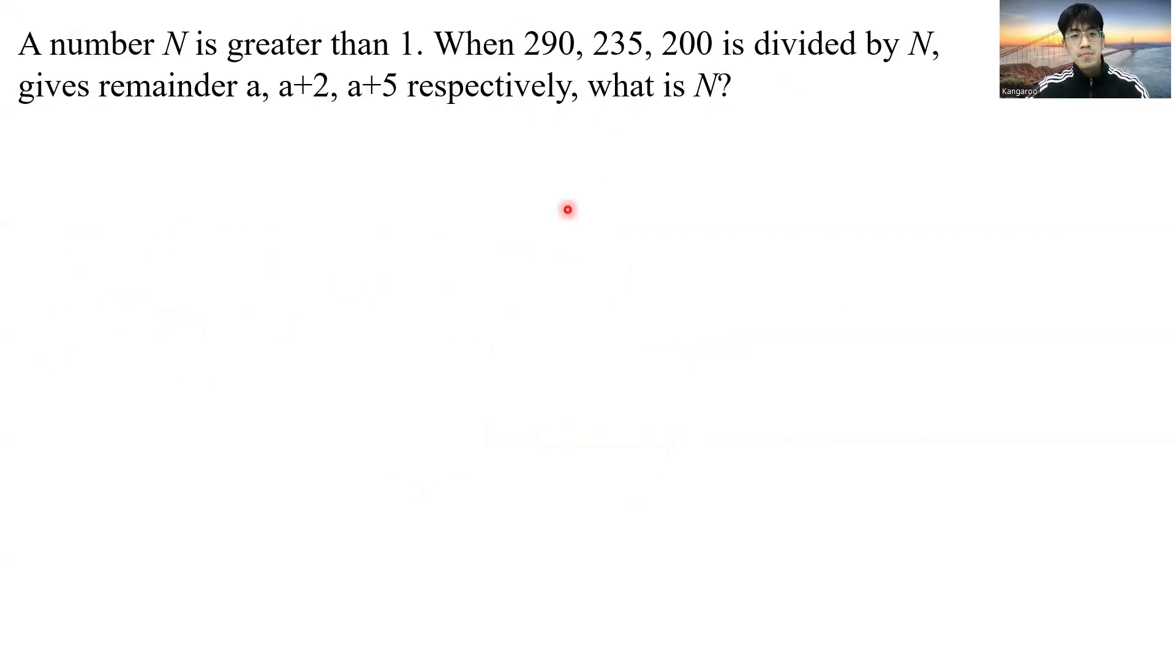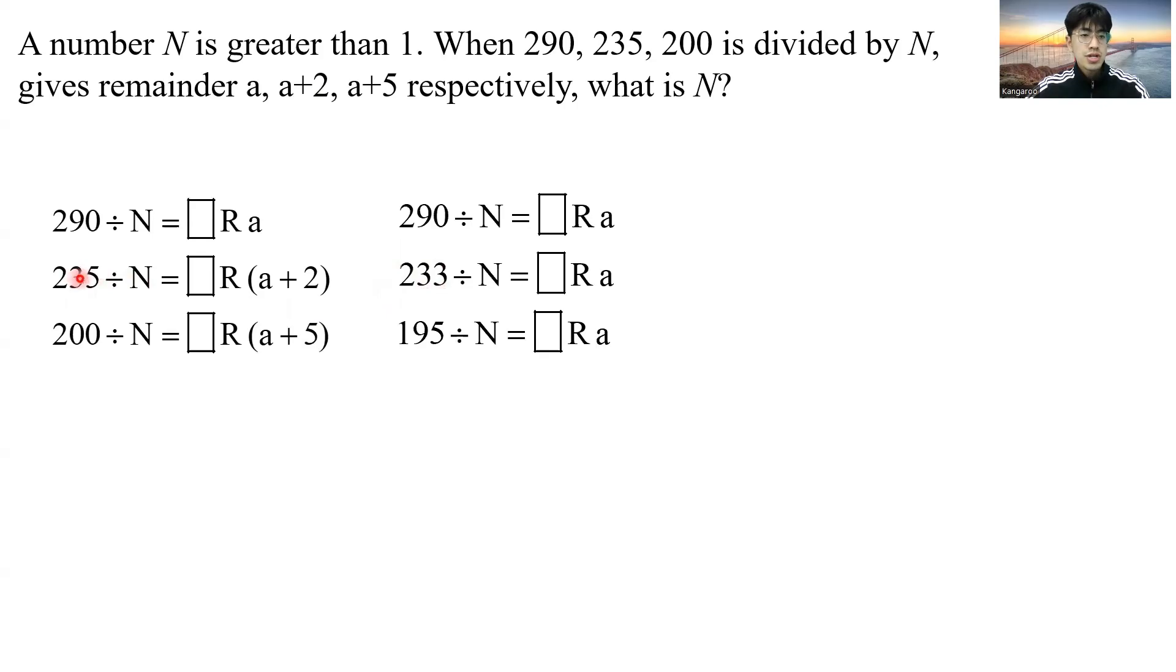Now, if we look at this original problem, I have 290, 235, and 200 divided by N gives different remainder. Now, if they are all a's, then it's just the case that we just solved. How do we get rid of this 2 and this 5 here? Well, I know that this 2 means that if I take 235 divided by a, it will remain a and not 2. So, if I reduce this dividend here by 2, then the remainder will just be a. And the same applies here. If I take wave 5 from this 200, this remainder would also be less with 5. So, I know 233, which is 235 minus 2, when divided by N, gives remainder a. And 195, which comes from 200 minus 5, when divided by N, gives remainder a.